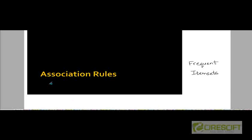Welcome to a new lecture on web data mining. Today, we are going to cover the topic of association rules, sometimes also called the topic of frequent item sets. The overall problem we're going to look at is discovering frequent item sets in data and then using the discovered frequent item sets to generate association rules between items. I'm going to explain what frequent item sets are and what association rules are. These two topics are actually closely related, which is why the names may seem very different but they are just alternative names for essentially the same topic.